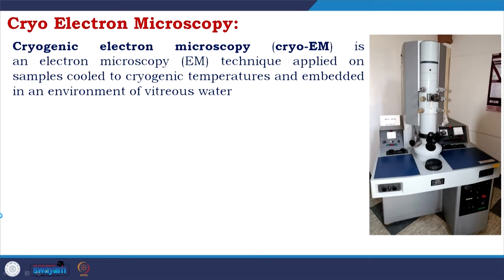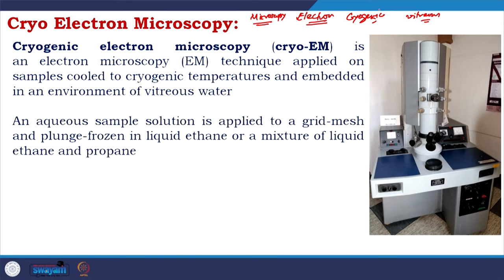There are four key terms: first, microscopy; second, electron microscopy; third, cryogenic temperature; and fourth, vitreous water. An aqueous sample solution is applied to a grid mesh and plunge frozen in liquid ethane or a mixture of liquid ethane and propane.